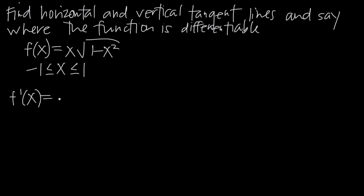Let's walk through finding the derivative of f(x). We're going to need to use the product rule because we have the product of two functions: x is one function and the square root of 1 minus x squared is the other. Because we have two functions multiplied together, we need to use product rule to take the derivative.